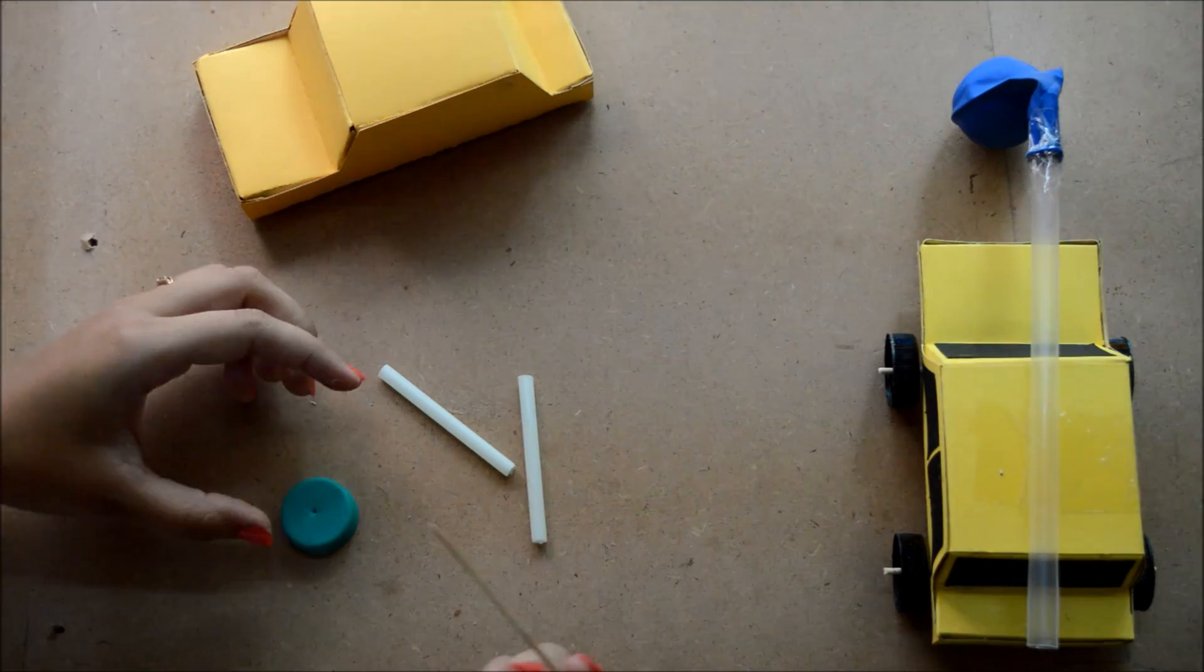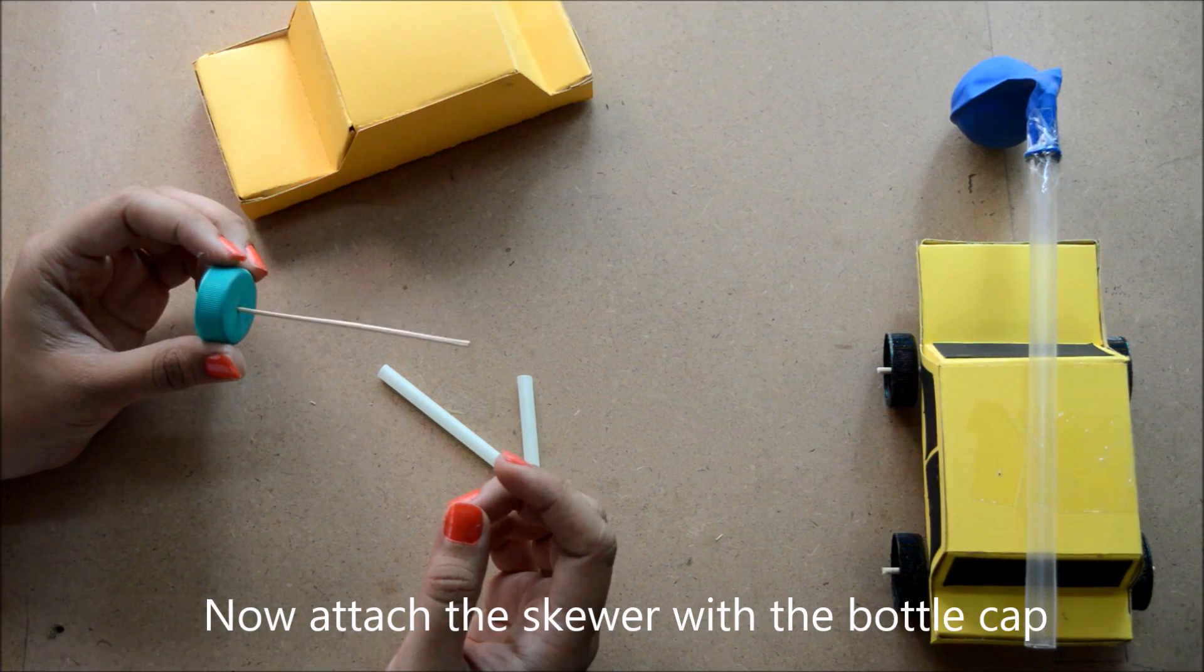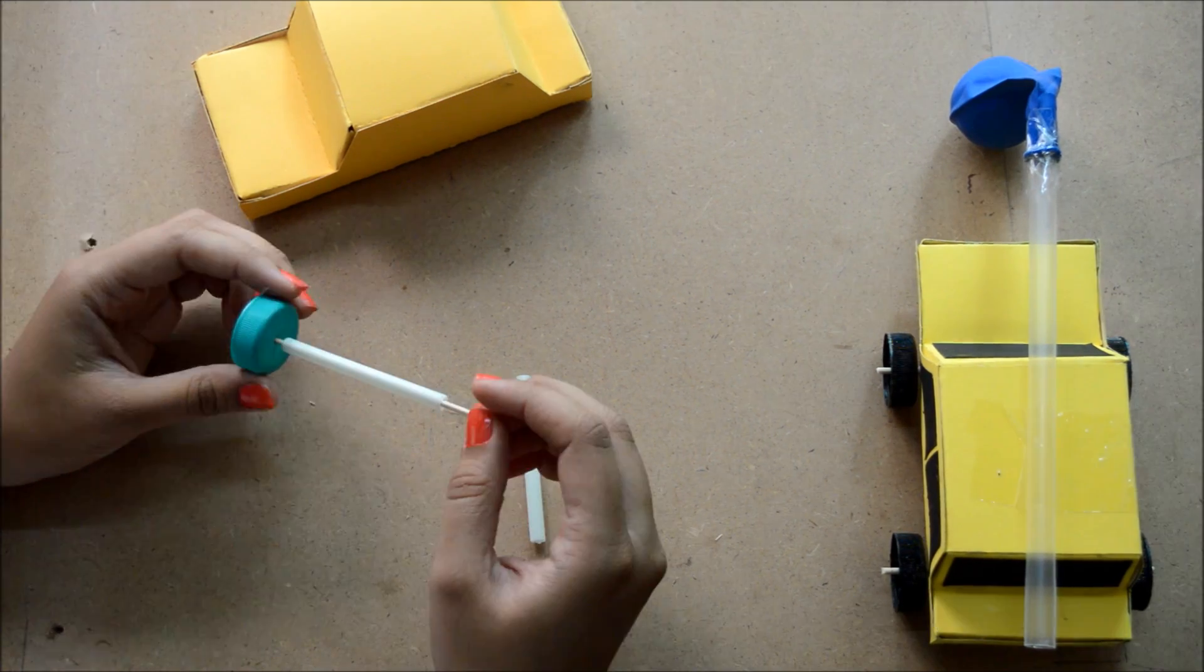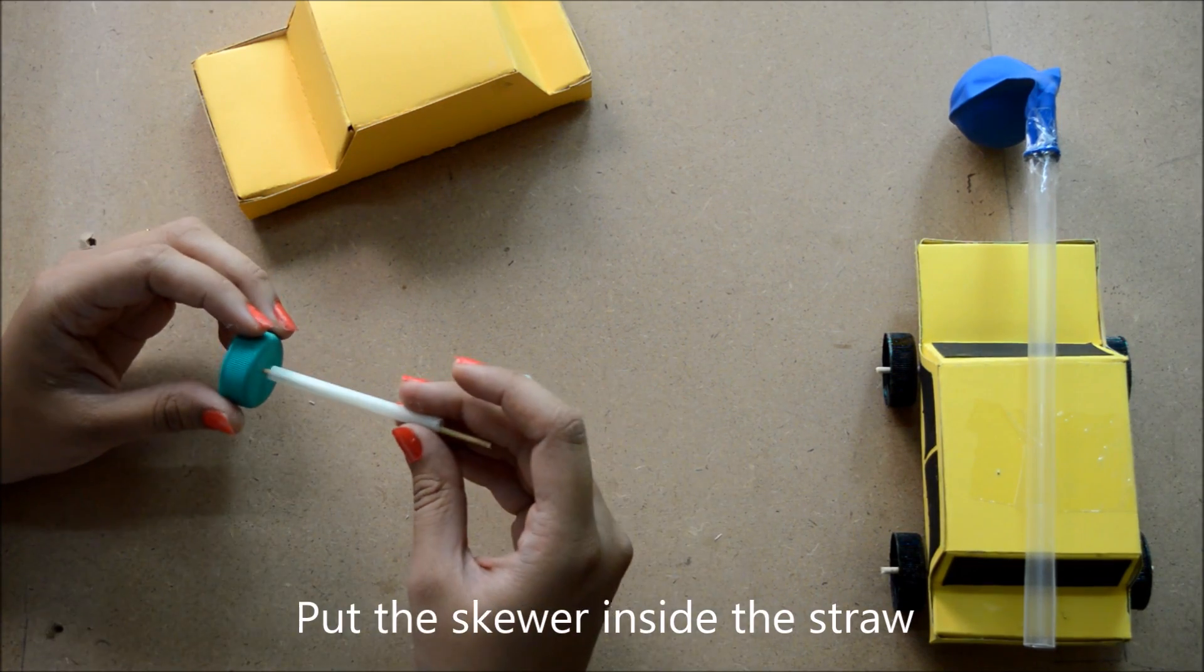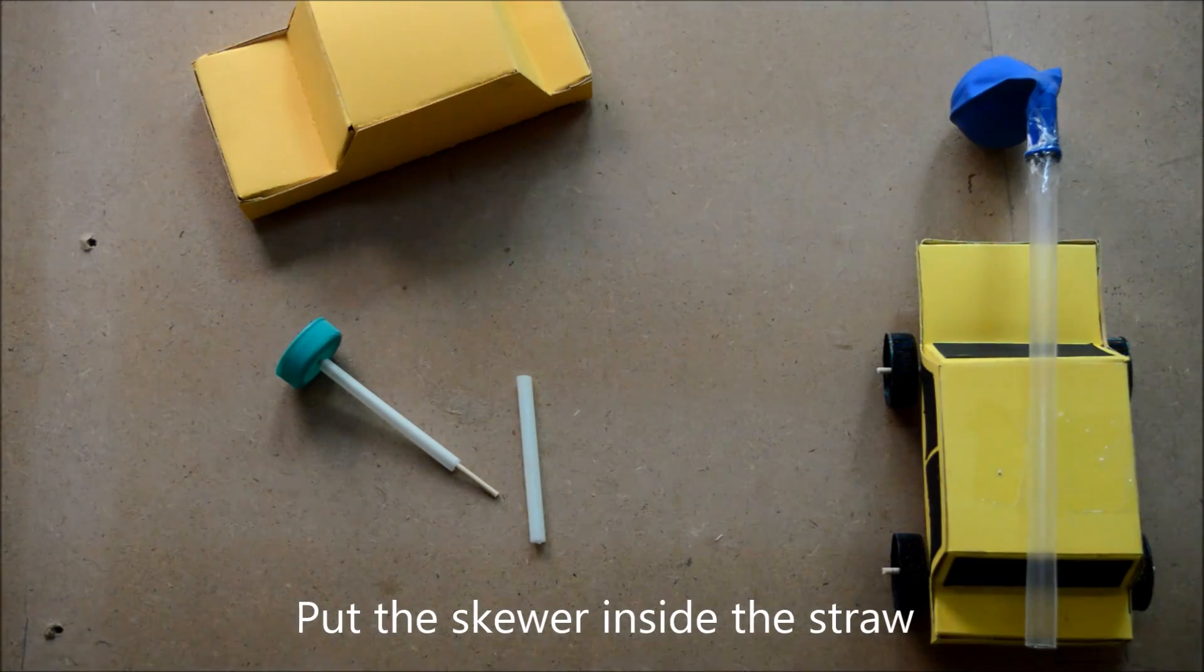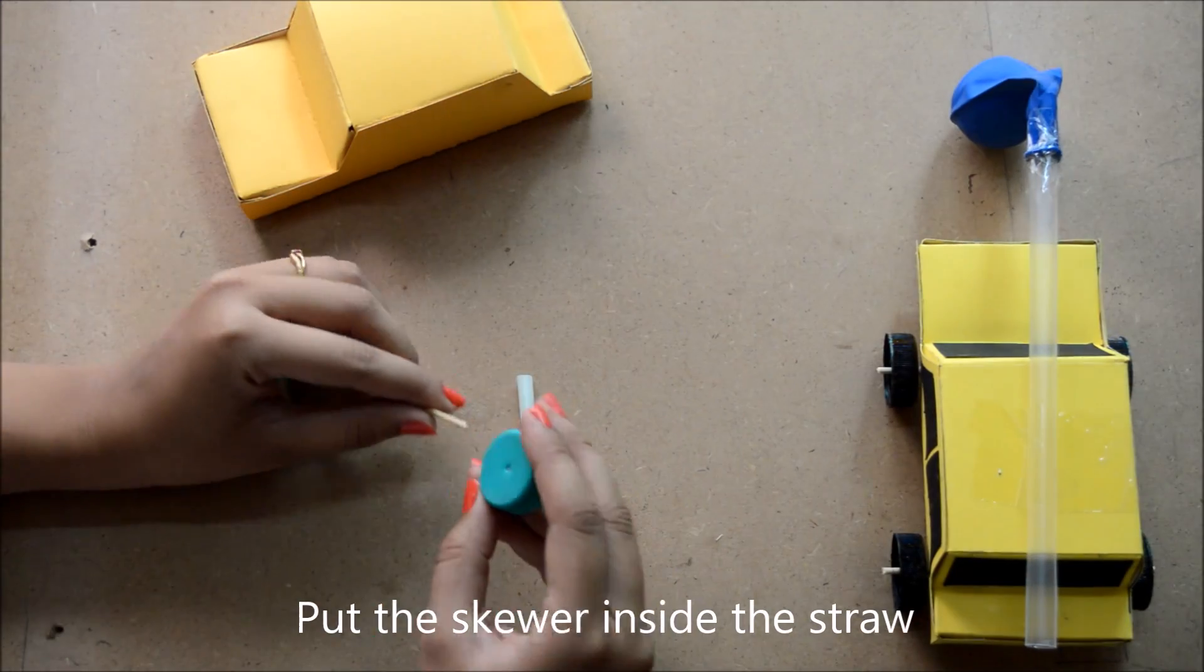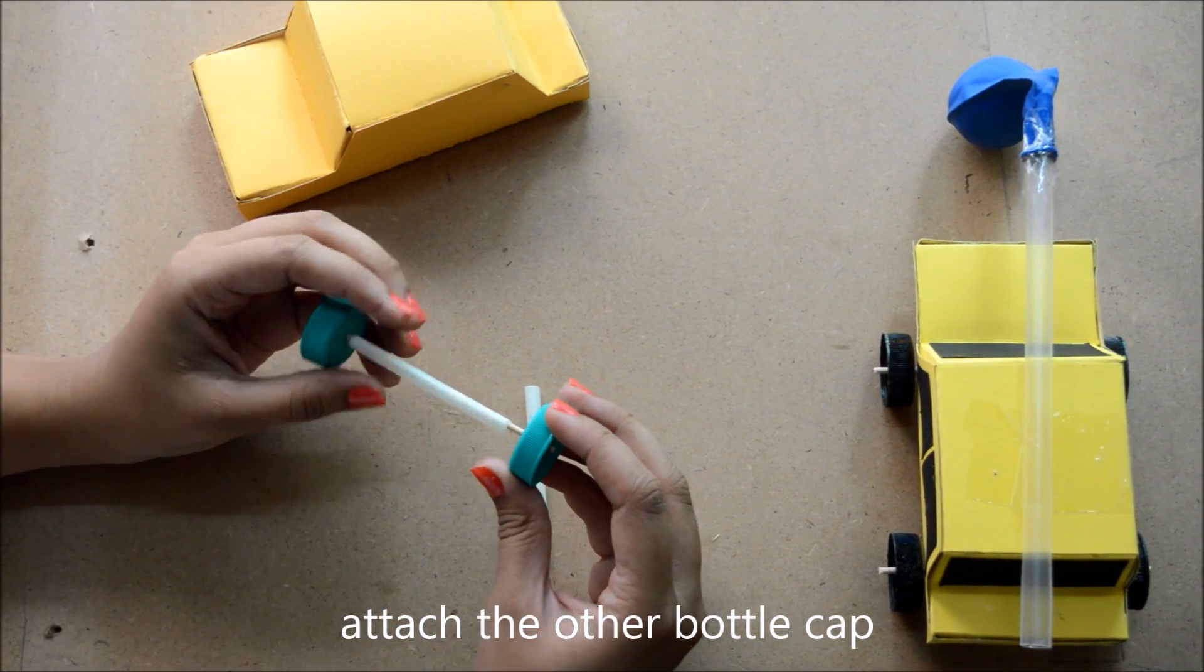Now attach the skewer with the bottle cap. Put the skewer inside the straw. Now attach the other bottle cap like this.